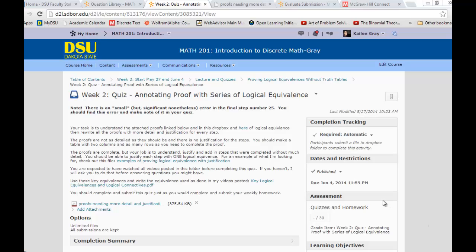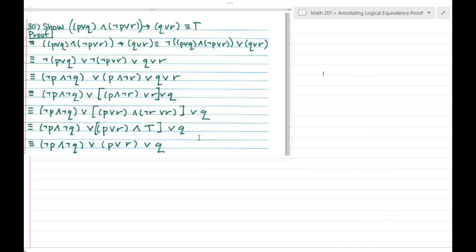A file that you definitely want to have open while you're completing this is the key logical equivalences and connectives. You're going to want to have those logical equivalences ready so you can try to figure out what's changing from piece to piece and which justification would be happening for each step that we take. So I'm going to talk through just a few of these steps here to help you understand what I'm looking for.